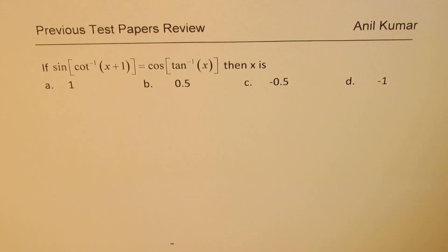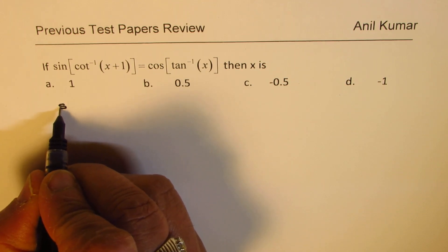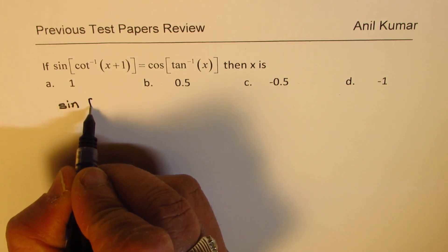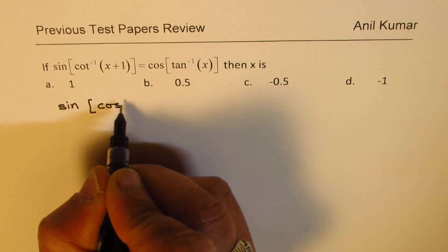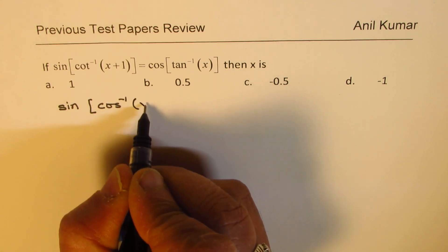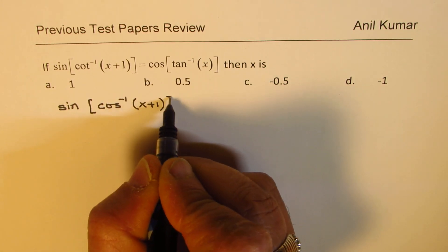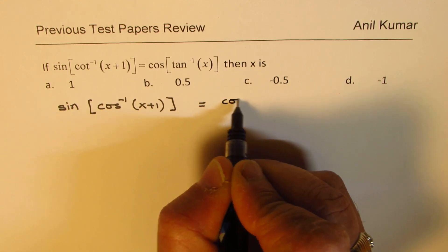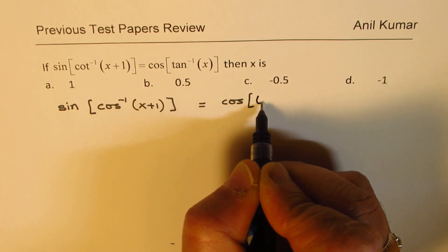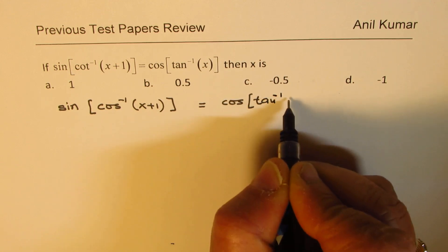Let us see how to solve it. Now whenever you have inverse functions, let me copy the question first. We have sine of cot inverse (x plus 1) equals cos of tan inverse x.